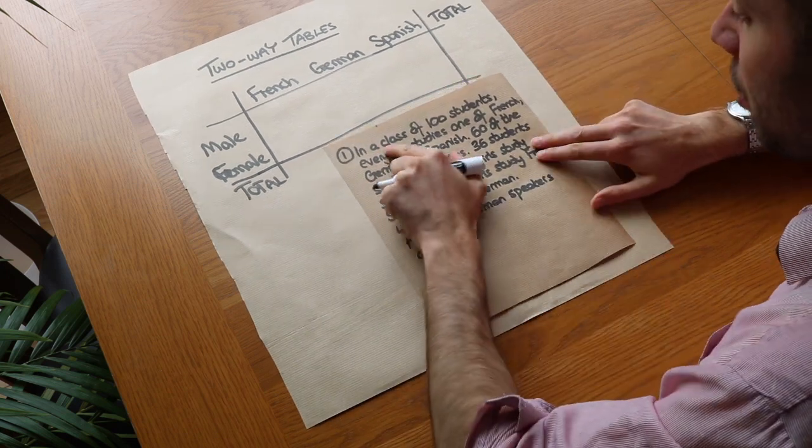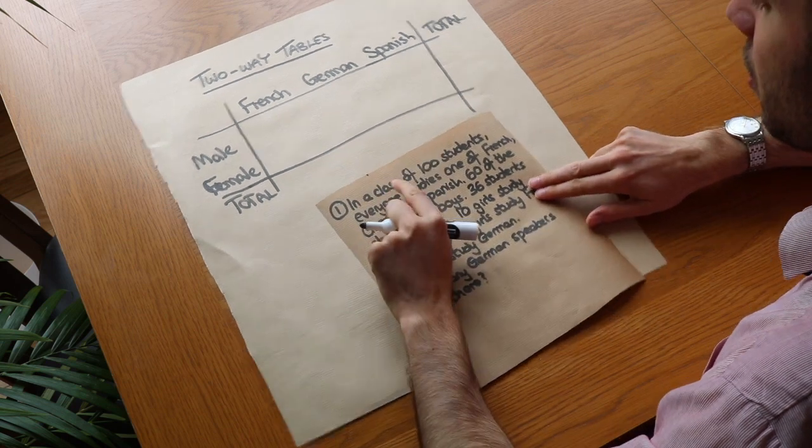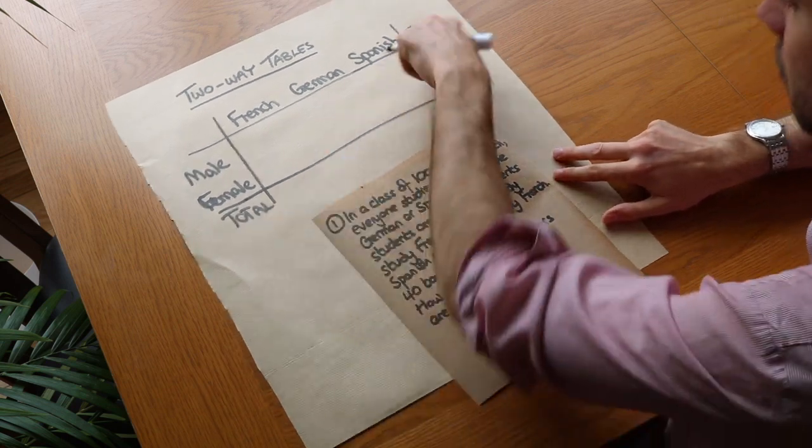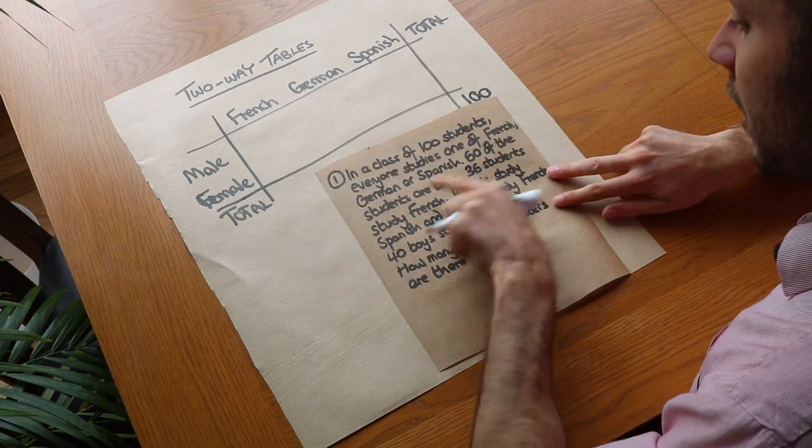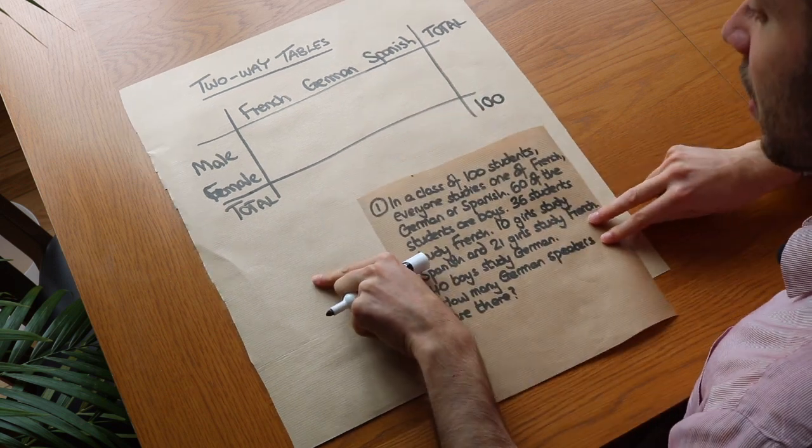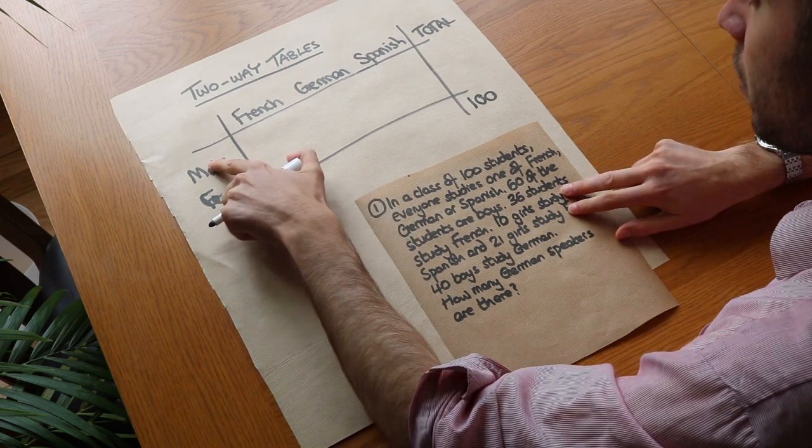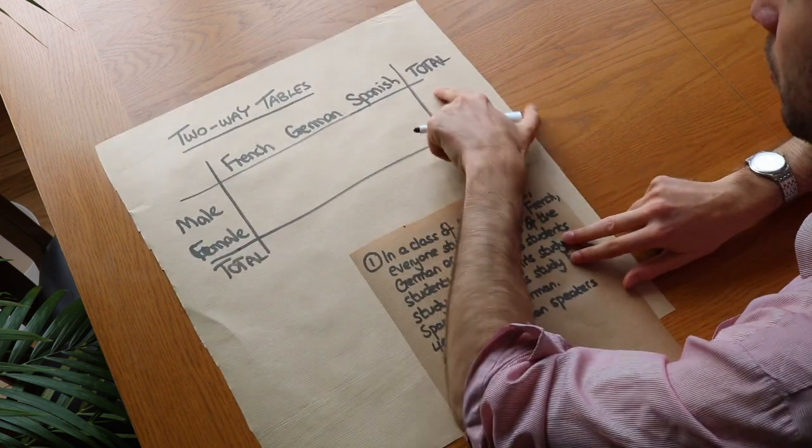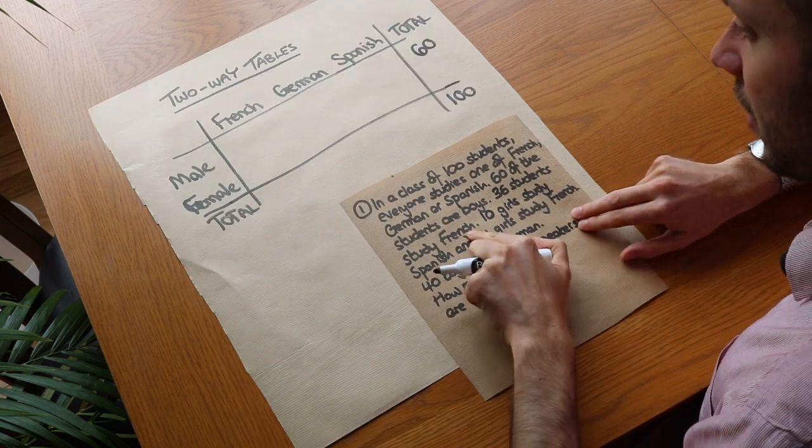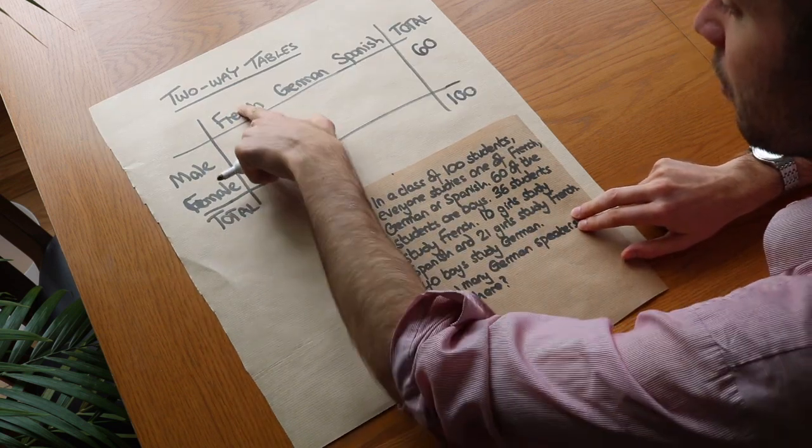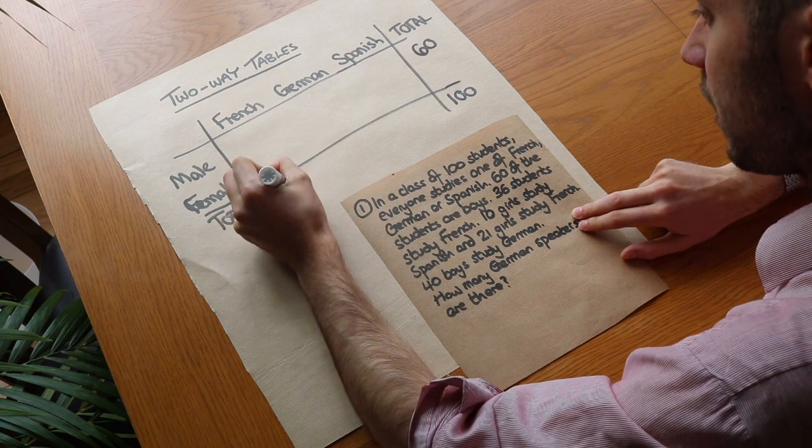So we're told in a class of a hundred students so the grand total of everyone is a hundred so the total total of everyone is a hundred. 60 of the students are boys so in the male row the total number of boys is 60 and then we're told that 36 students study French so the total number of French speakers would be 36.